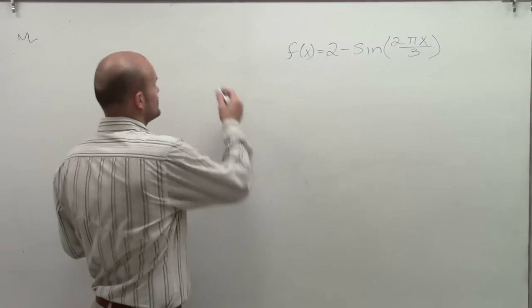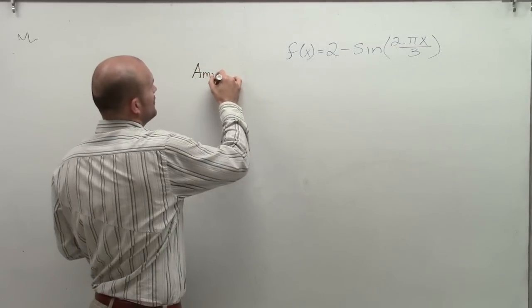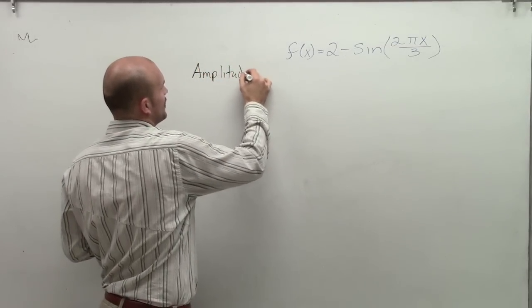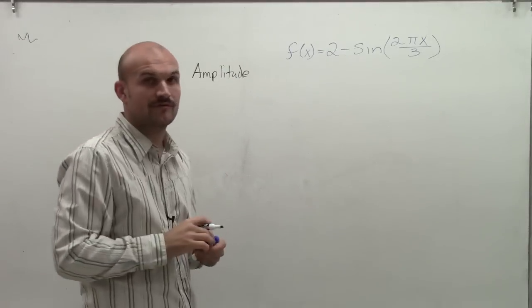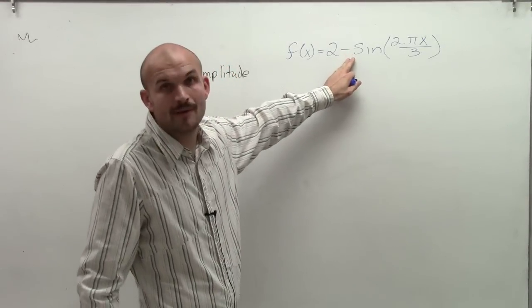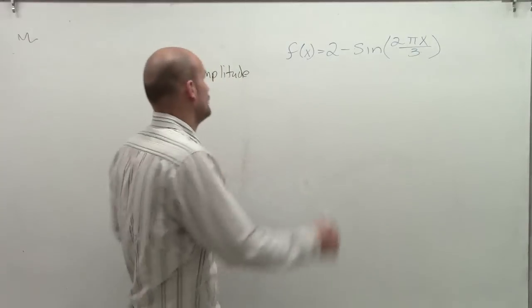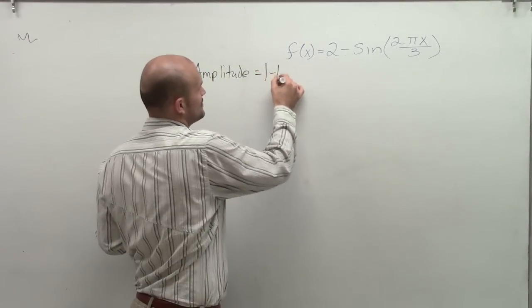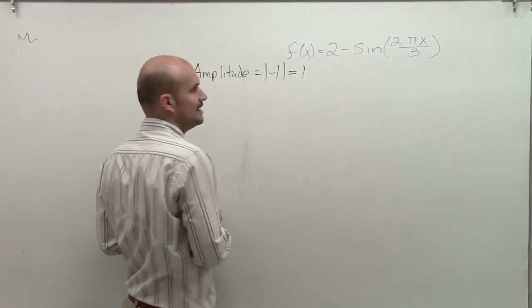The first thing we want to look at is always to see what the amplitude is. And remember, the amplitude is going to be your a in your standard form of your trigonometric function. So your a is going to be what's going to be multiplied by your function, which here I have a negative 1. So therefore, I can represent the absolute value of negative 1 is just going to equal 1.